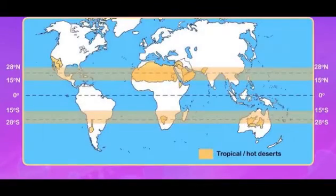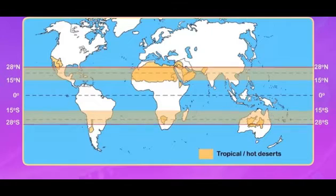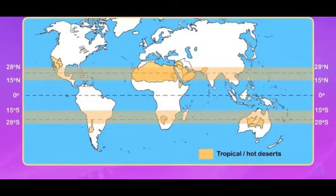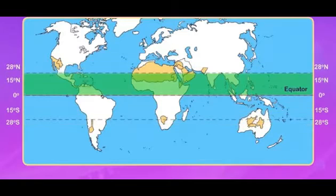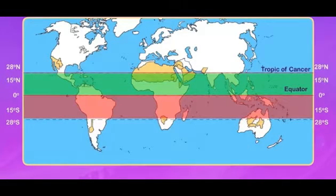They are located between the latitudes 15 degrees to 28 degrees north and south. They lie in the regions between the equator and the Tropic of Cancer in the northern hemisphere, and between the equator and the Tropic of Capricorn in the southern hemisphere.